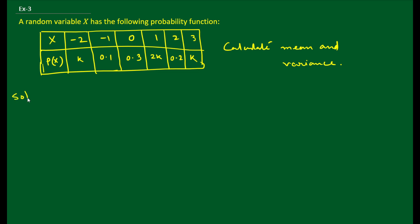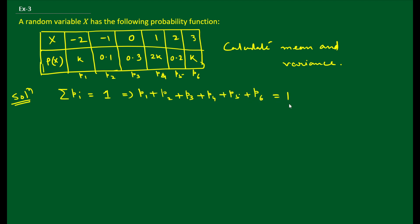First we find the unknown constant K. We know that the sum of all probabilities equals 1. So: K + 0.1 + 0.3 + 2K + 0.2 + K = 1. Solving this equation gives K = 0.1.